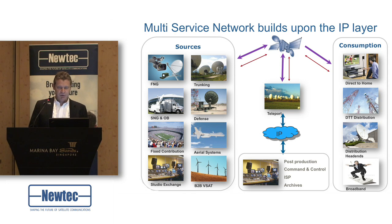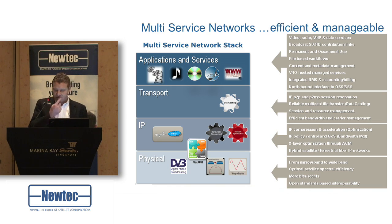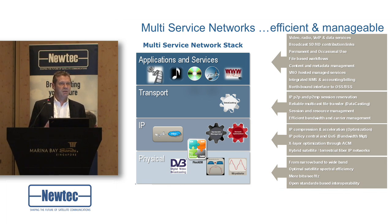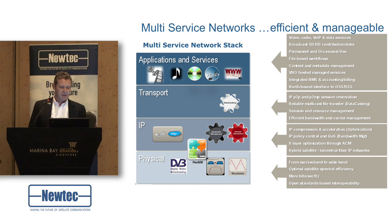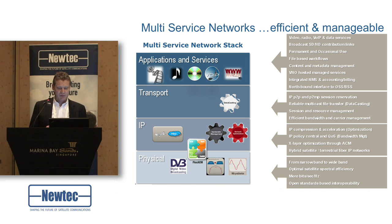We can do that if you look at the full network stack. Of course we need to have a common physical layer. We already talked about DVB-S2 as the standard physical layer today. The physical layer can be enhanced with technologies like clean channel technology and Equalink, which is a pre-distortion technology, to maximize throughput on the physical layer.